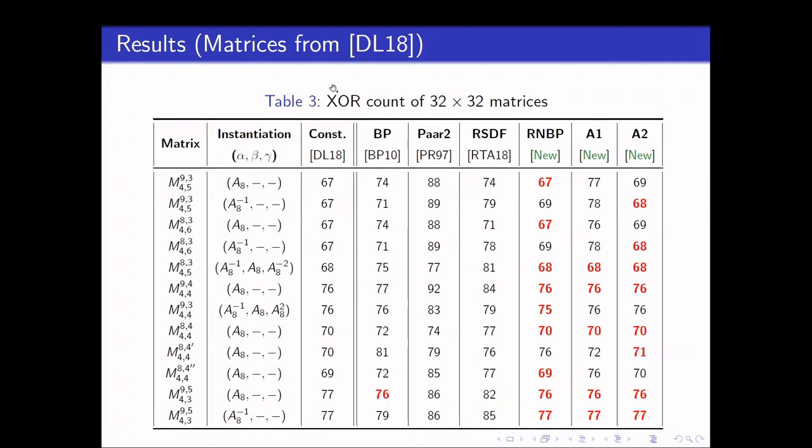In this table, we show the XOR count of the 32x32 matrices. In this table, we can see that RMBP and A2 are the ones getting the lowest XOR count.